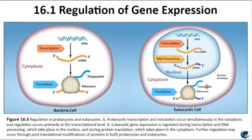Figure 16.3 illustrates the differences between prokaryotes and eukaryotes in gene expression regulation. Prokaryotic transcription and translation occur simultaneously in the cytoplasm, with regulation occurring primarily during transcription. Eukaryotic gene expression is regulated during transcription, RNA processing, protein translation in the cytoplasm, and through post-translational modifications of proteins.